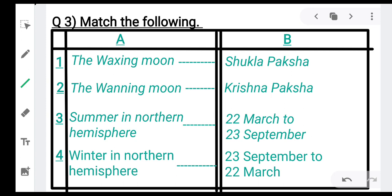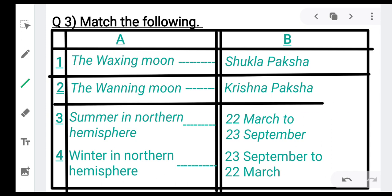Now question number three, match the following. First is the waxing moon, the answer is Shukla paksha. Second one is the waning moon, the answer is Krishna paksha.